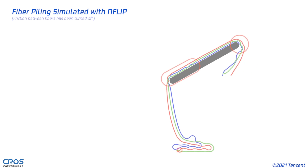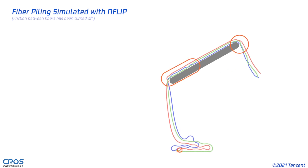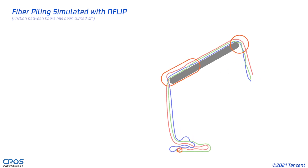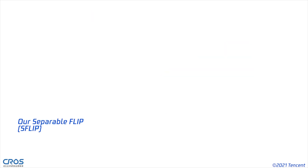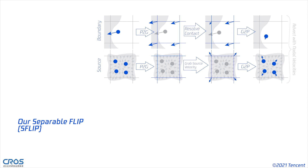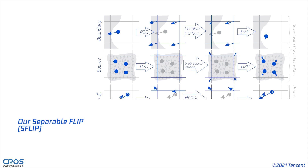However, NFLIP has its defects. It handles neither particle-particle collision nor particle-boundary collision, as shown here. We propose a positional correction to fix these problems. When boundary conditions control the particles, we use the nodal velocities to advect.